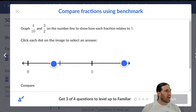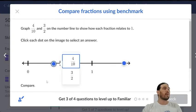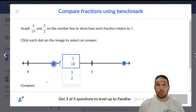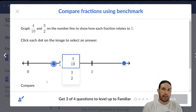Okay. Graph four-tenths and three-halves on the number line to show how each fraction relates to one. Click on each dot to select an answer. Oh, okay. So now we are going to be talking about so-called proper and improper fractions, but instead of calling them that, we're going to be looking at fractions that are bigger than one and fractions that are less than one.